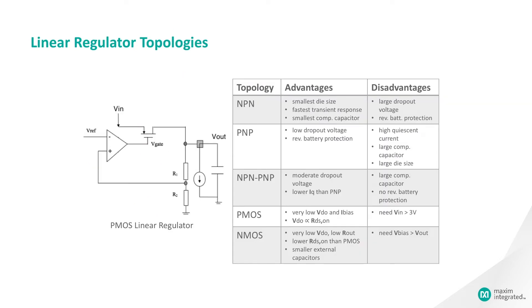Linear regulators can be classified by their series root transistor. There are NPN, PNP, NPNPNP, PMOS, and NMOS types. This table shows the advantages and disadvantages of different topologies. The majority of linear regulators are still bipolar, due to the lower cost in comparison to MOS devices.